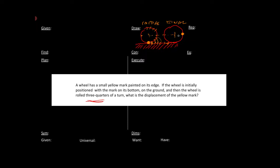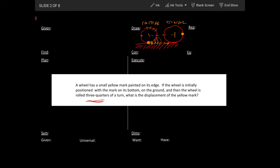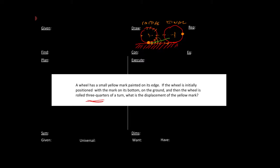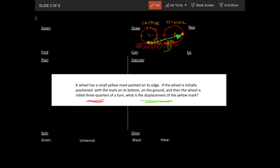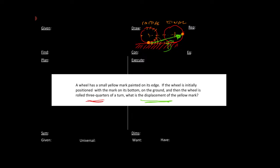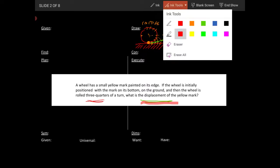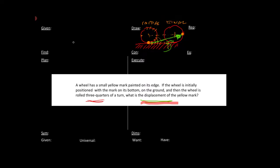So we end up with — if it's going three-quarters of a turn — this point comes here, that point comes here, that point comes here, and so forth. So three-quarters has this point at the bottom, which means we have to go backwards one quarter of a turn. So this is our final state. We've gone this distance, which we have to figure out. We want to find the distance between these two little marks — from here to here. We'll call that d — we want to find that displacement vector.